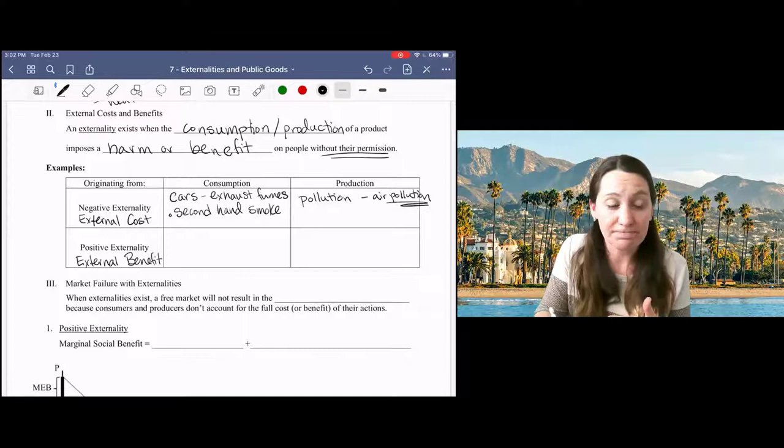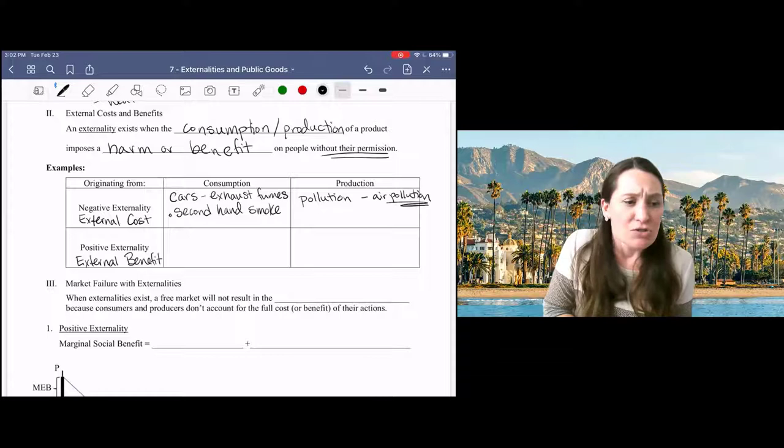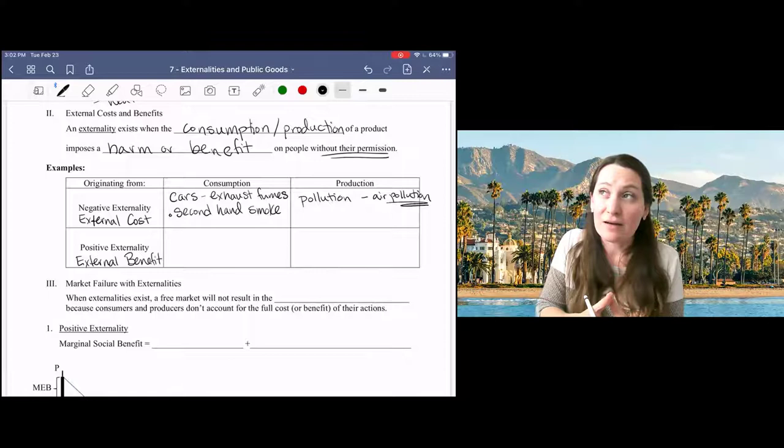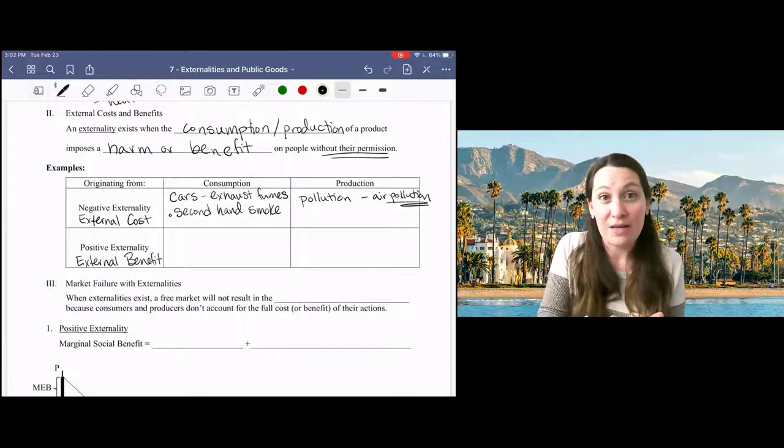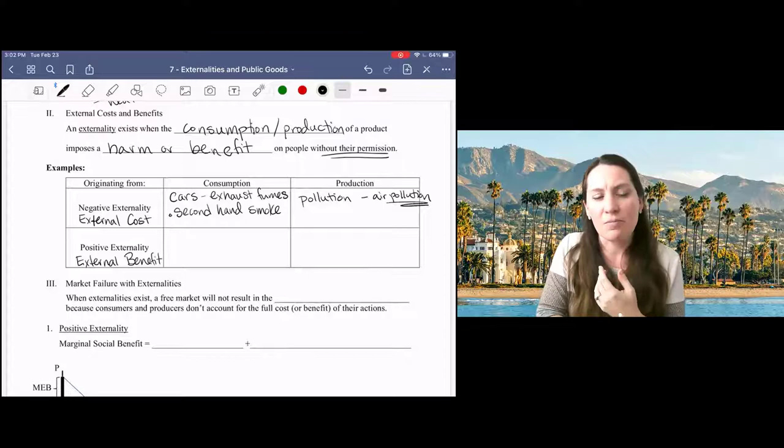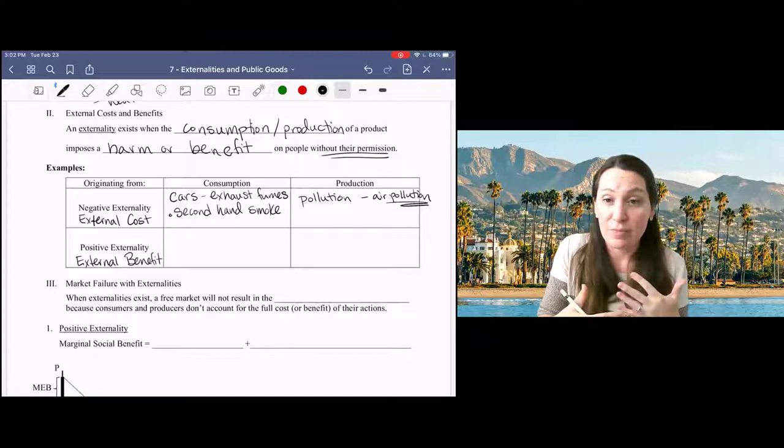Let's turn now to positive externalities. So external benefits are a bit harder to think of in part because we don't regulate them as frequently. And that's because it's clearly more compelling to say you're hurting me and you need to stop than to say you're not doing this thing that would also benefit me, so I need you to do it.